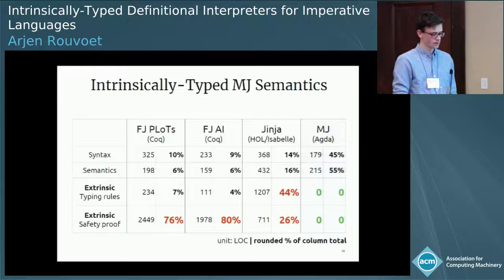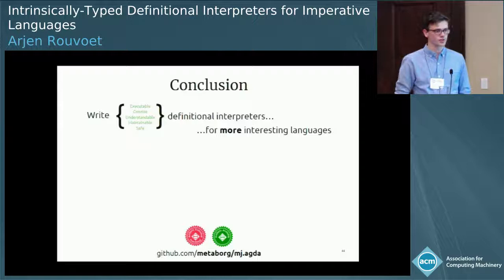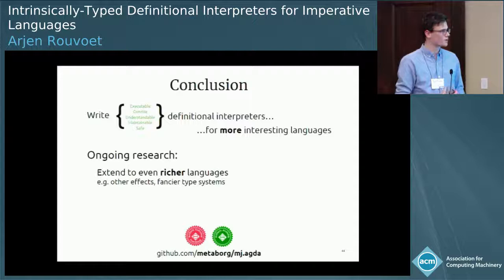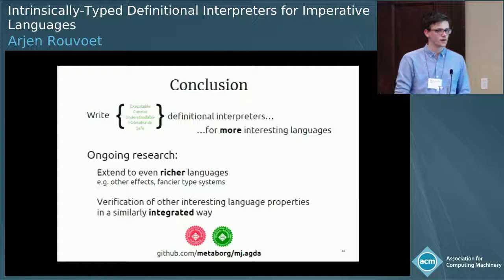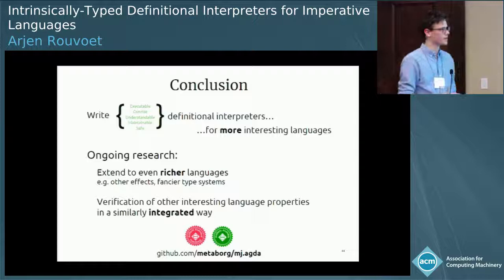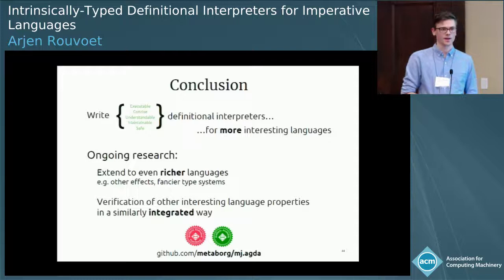This work focused on defining definitional interpreters with these properties for more interesting languages than we could do before. In future work, we try to see if we can do this for even richer languages — languages with more effects or languages with fancier type systems. We're also interested in figuring out if we can verify other interesting language properties in a similarly integrated way. If this has made you curious about the real semantics defined for Middleweight Java, I encourage you to have a look at our artifact on GitHub. We spent a lot of effort trying to make this approachable, even if you don't have an Agda environment set up. Go have a look. Thank you.